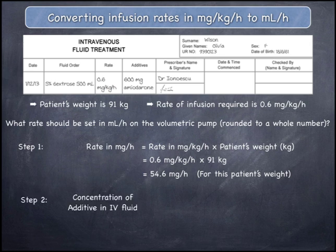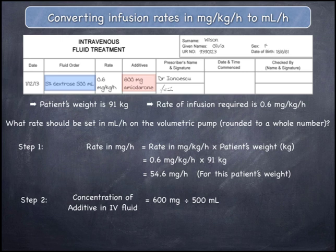In the second step, calculate the concentration of the 600 milligrams of amiodarone additive in the 500 mils of 5% dextrose. This is equal to the quantity of amiodarone — 600 milligrams, as read from the order — divided by the volume of the IV fluid, which is 500 mils. This gives 1.2 milligrams per mil, meaning that every one mil of IV fluid contains 1.2 milligrams of amiodarone.